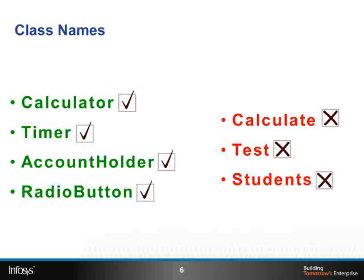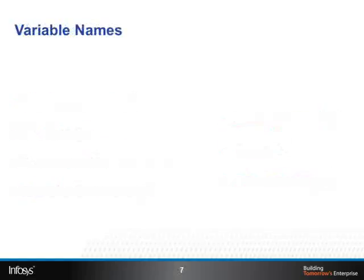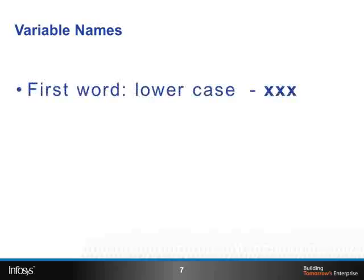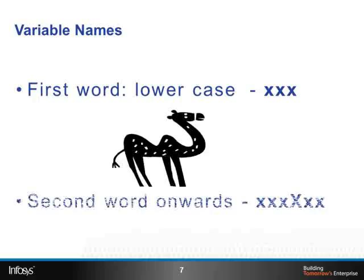We will take a look at variable names. The first word of the variable will be in lowercase. In case of more than one word, we use camel casing from the second word onwards.